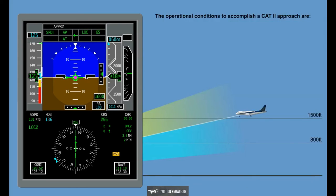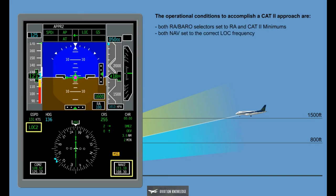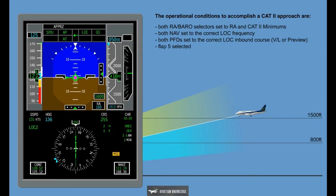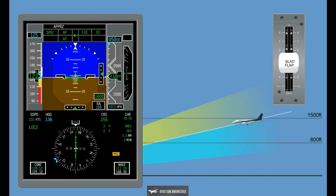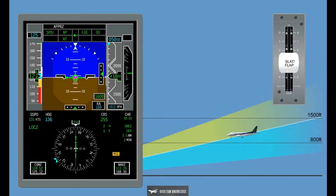The operational conditions to accomplish a CAT 2 approach are: both RA/Baro Selectors set to RA and CAT 2 minimums; both NAV set to the correct localizer frequency; both PFDs set to the correct localizer inbound course, VL or Preview; Flap 5 selected; and all described conditions established at or above 800 feet RA. If the flap setting is the only remaining condition to be satisfied for CAT 2, the armed status will remain displayed down to 800 feet RA, suggesting that there is still one pilot's action pending.